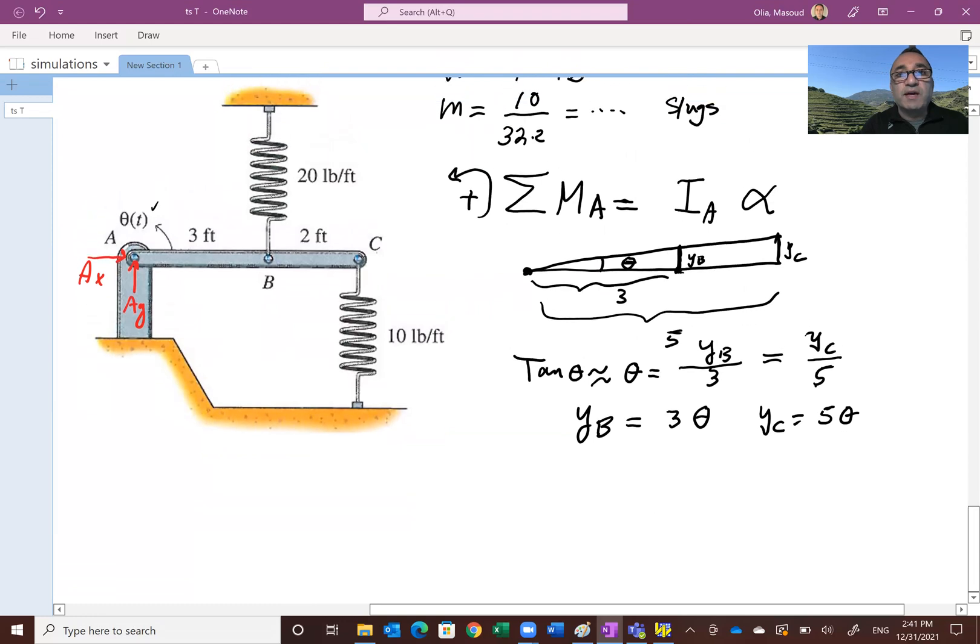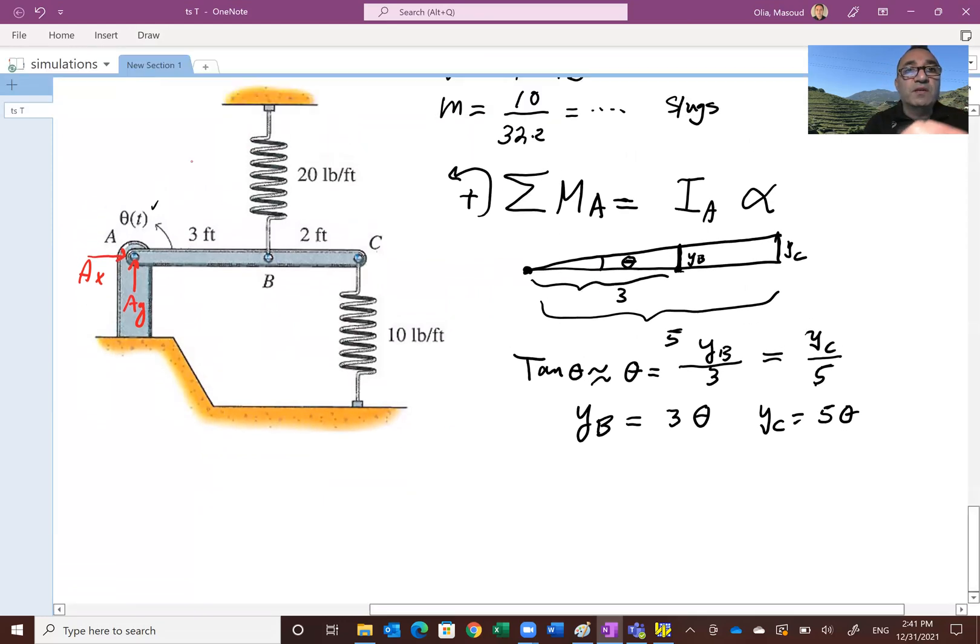Now with that in mind, let me draw the free body diagram. If we disturb this by a small angle theta, this spring at B is going to be compressed, so it pushes back with force K of 20 times the deformation, three theta. Similarly, the spring at C is going to be stretched, so it's pushing back in this direction with force 10 times five theta. Remember that I didn't include the gravity - I mentioned at the beginning that gravity is going to come out of the differential equation.